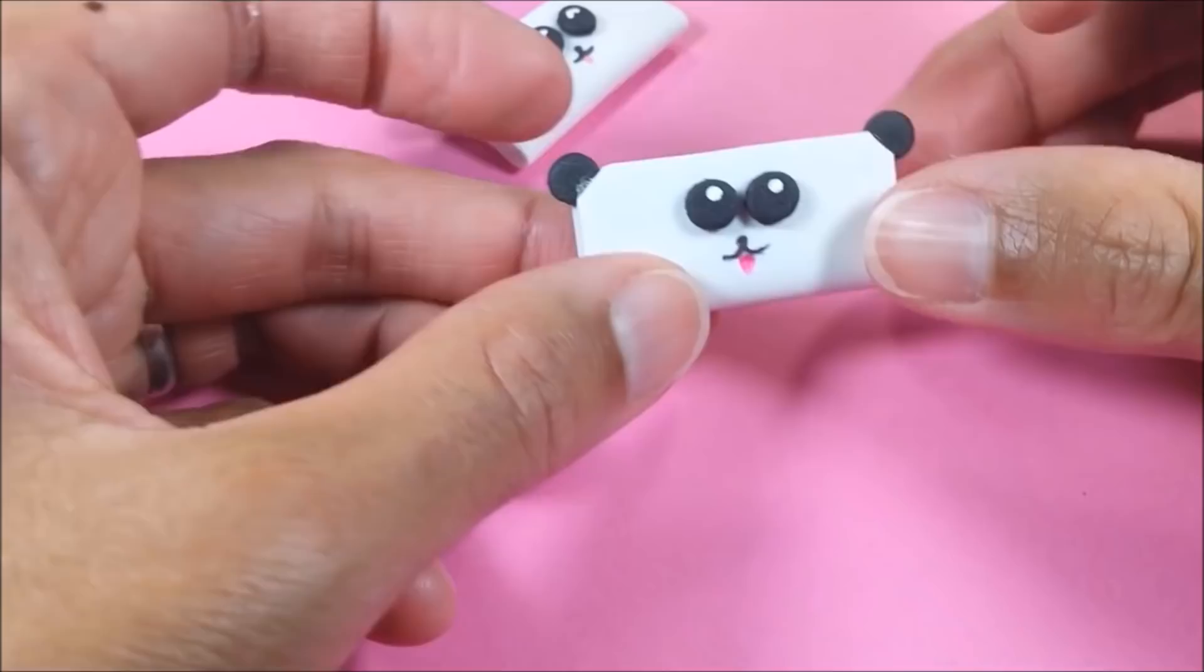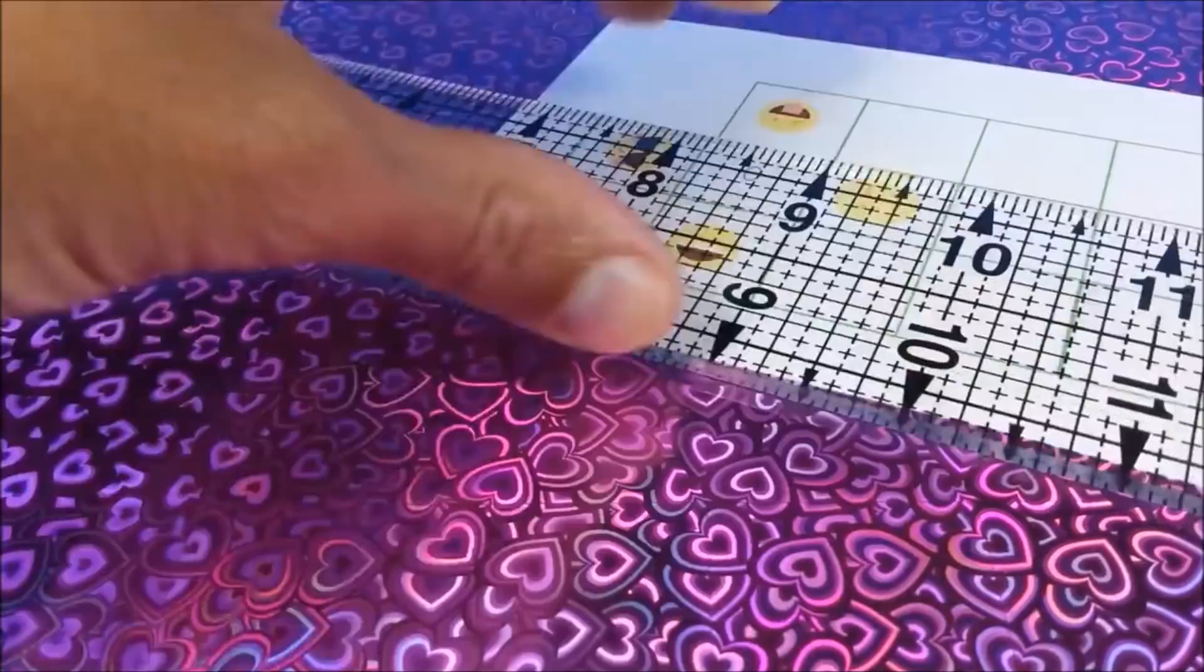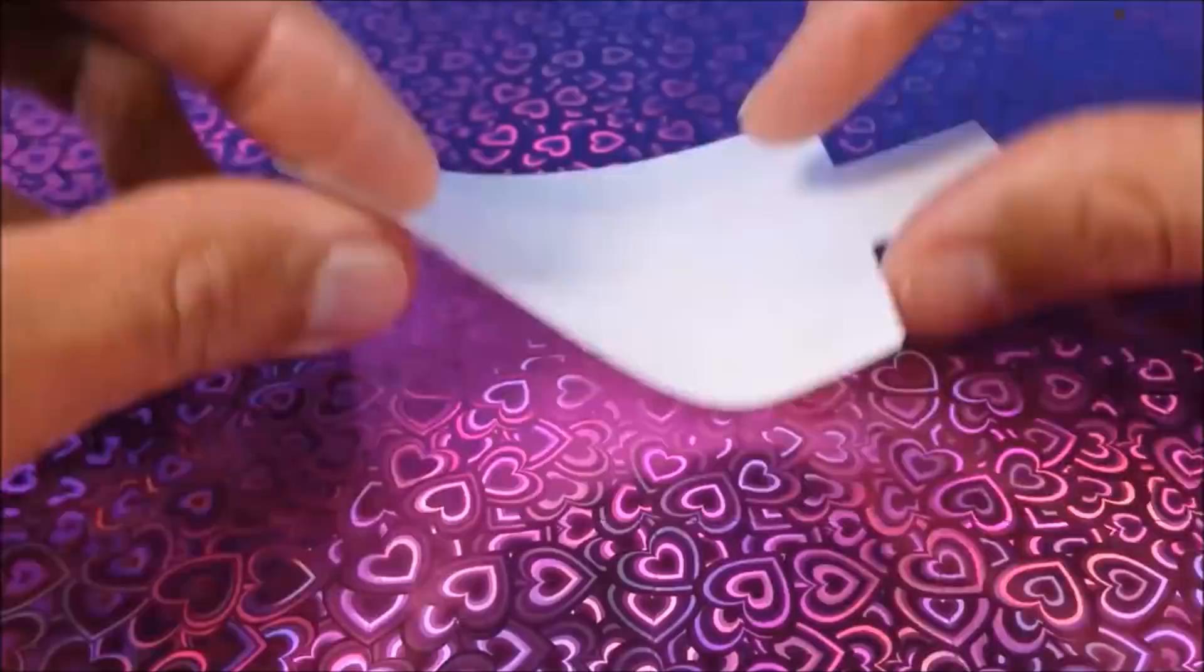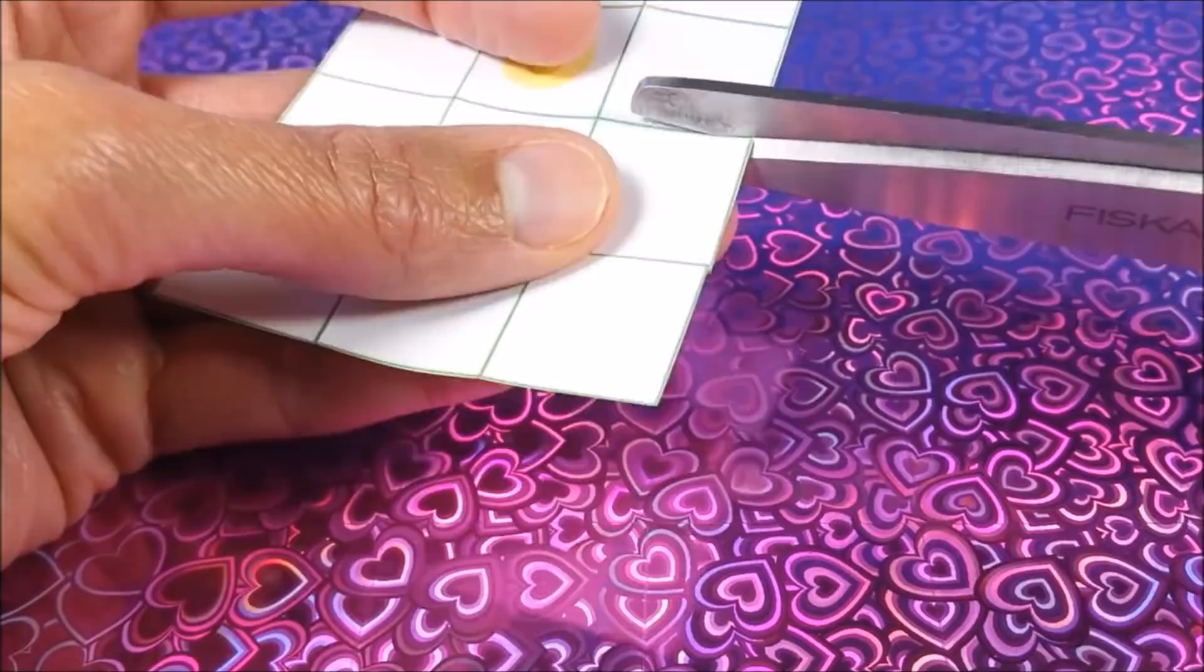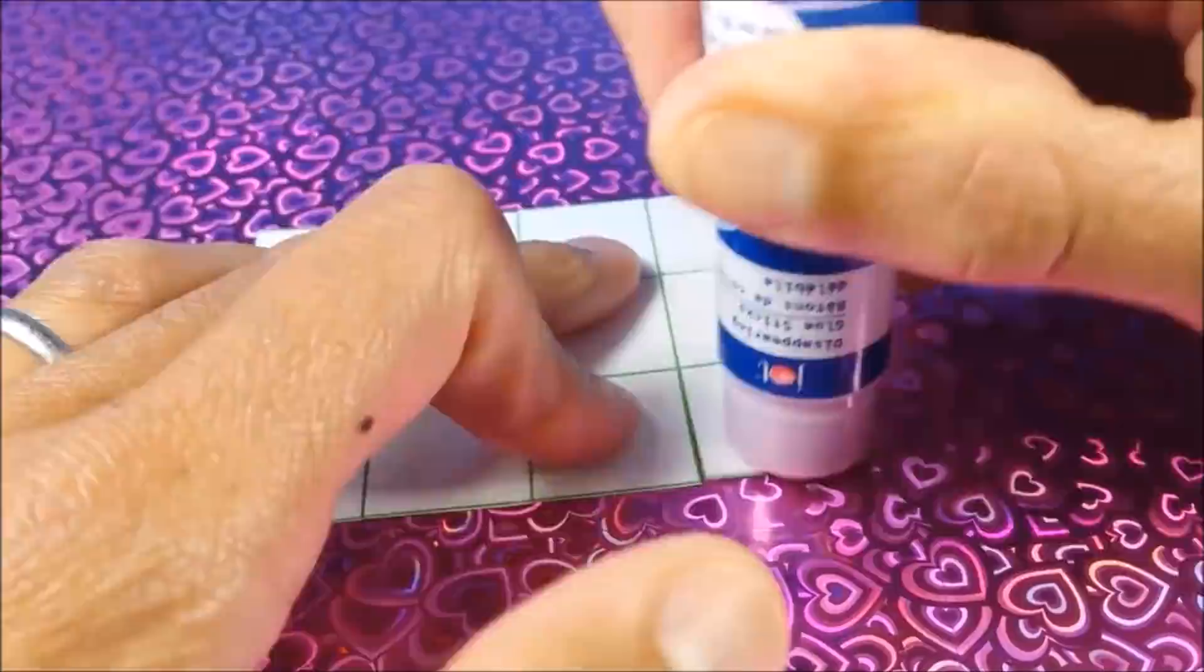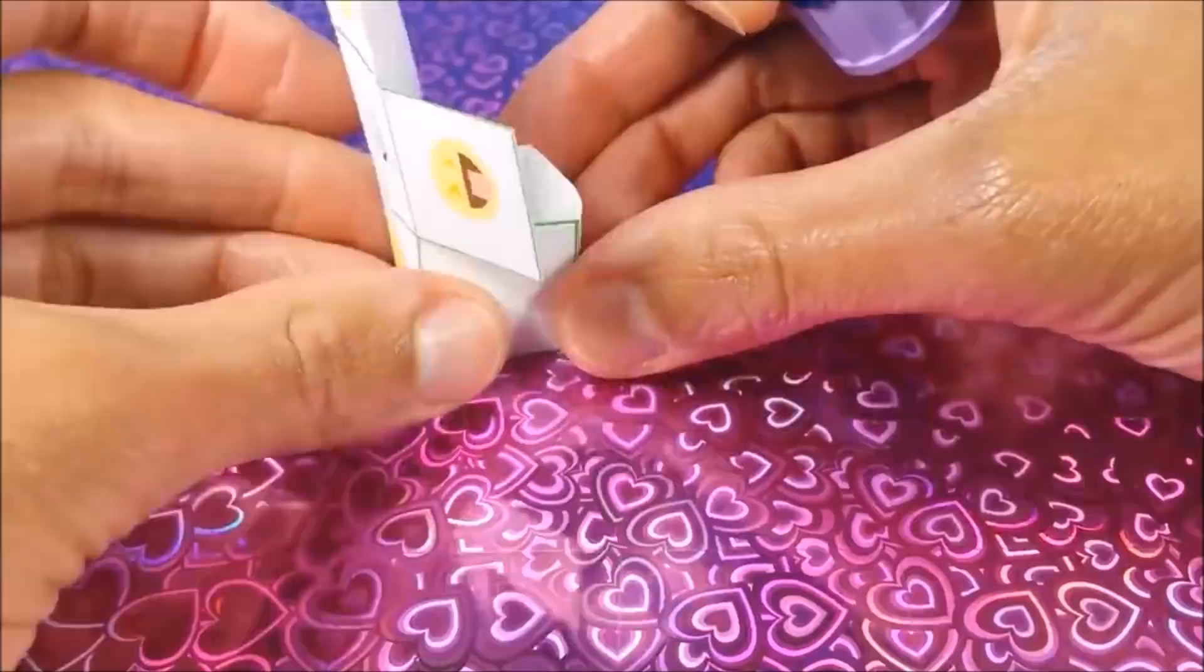Number five is a super easy tissue box. Again, just using a printable, which I print on paper. I will link to these in the description section. Score on my lines, cut my tabs along the sides, punch a hole along the top, and assemble. Cut out the piece of tissue and stuff inside.